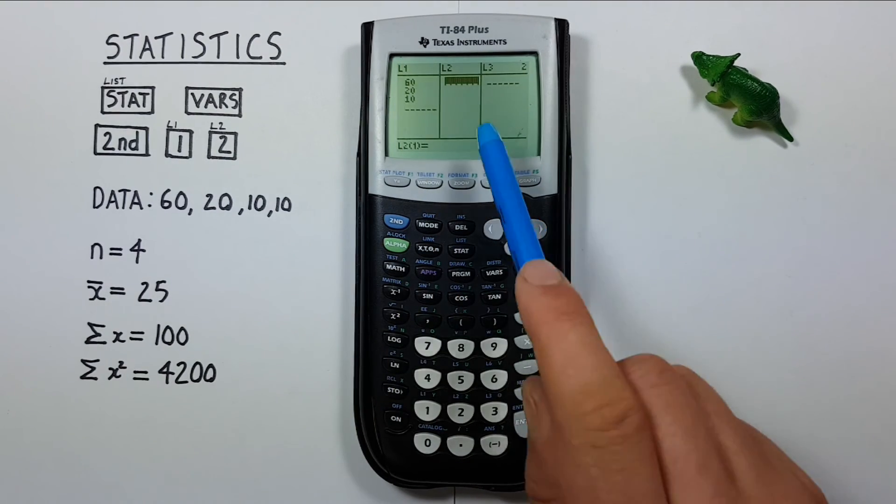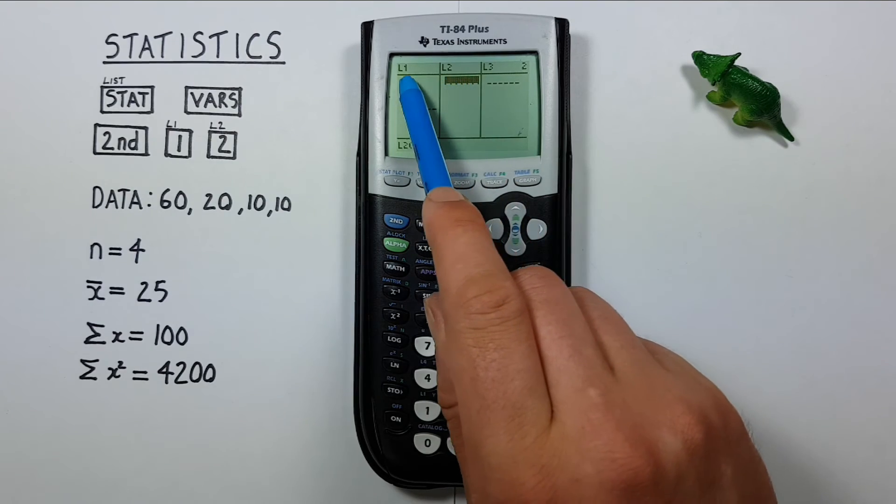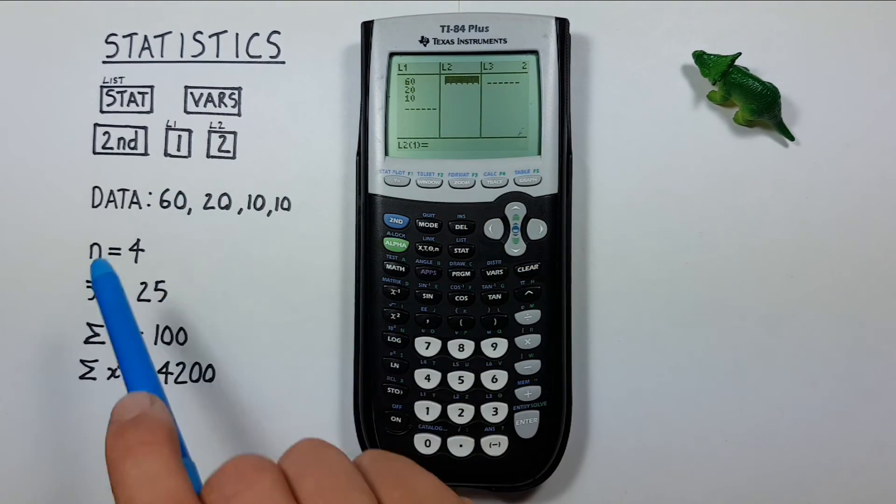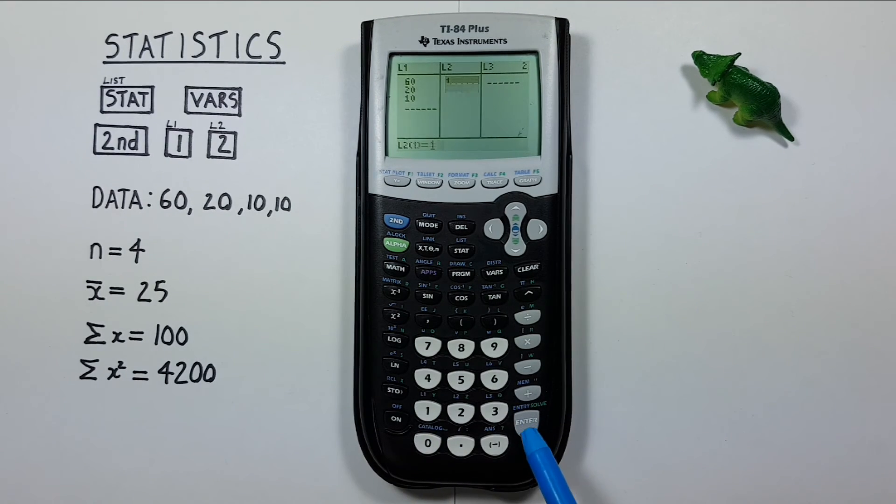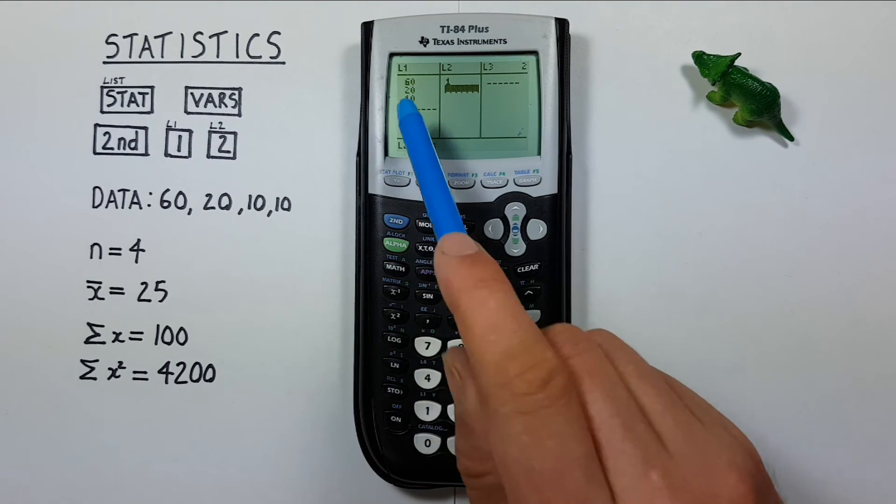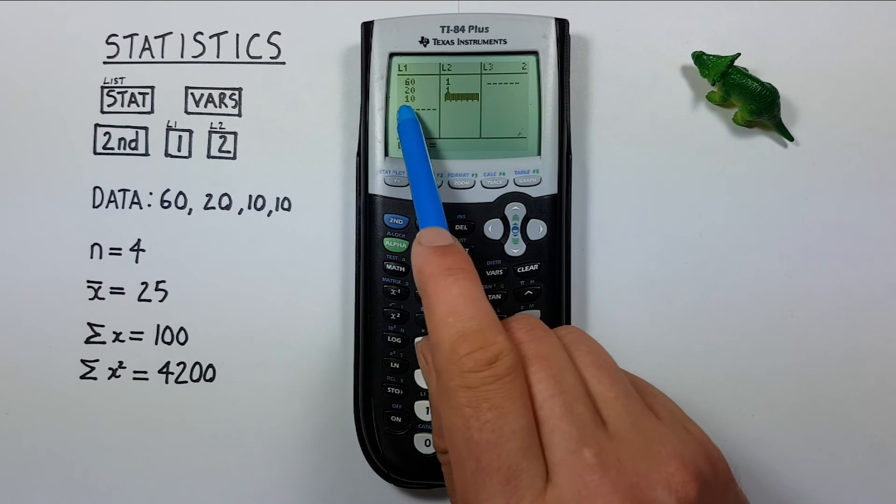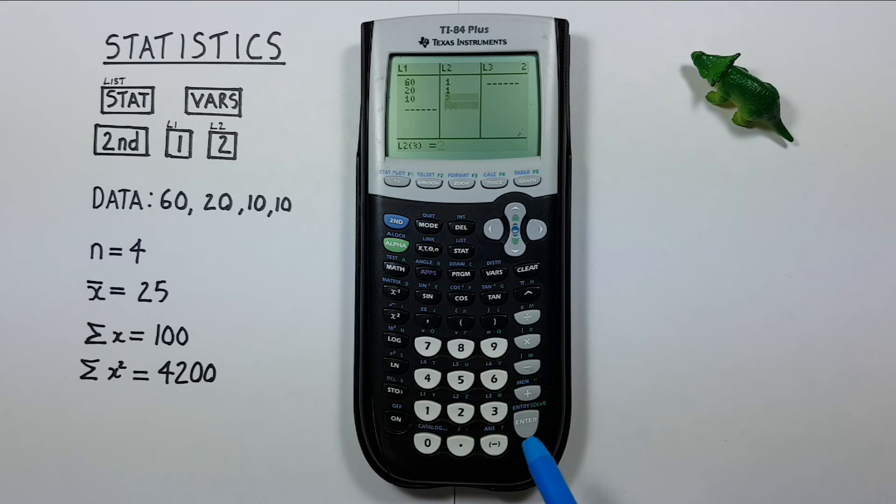And then if we scroll over to list 2, we enter the number of times each piece of data appears. So 60 only occurs once. There we go. 20 only once. 10 occurs twice, so we'll put 2 there. And we're done entering our list 1 and list 2.